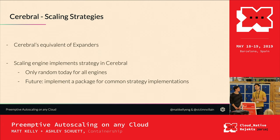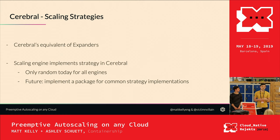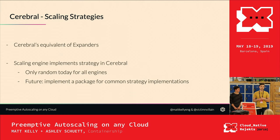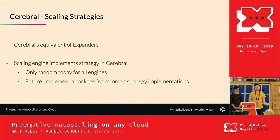Cerebral calls them scaling strategies — the same idea as expanders in the Kubernetes cluster autoscaler. Today we only support random, but in the future we hope to implement more. In particular, we'd like to take inspiration from the Kubernetes cluster autoscaler's pricing API, where a cloud provider implements it to minimize costs, and pull that into a common package so that even though it's up to the engine to implement the strategy, you get some help from Cerebral.